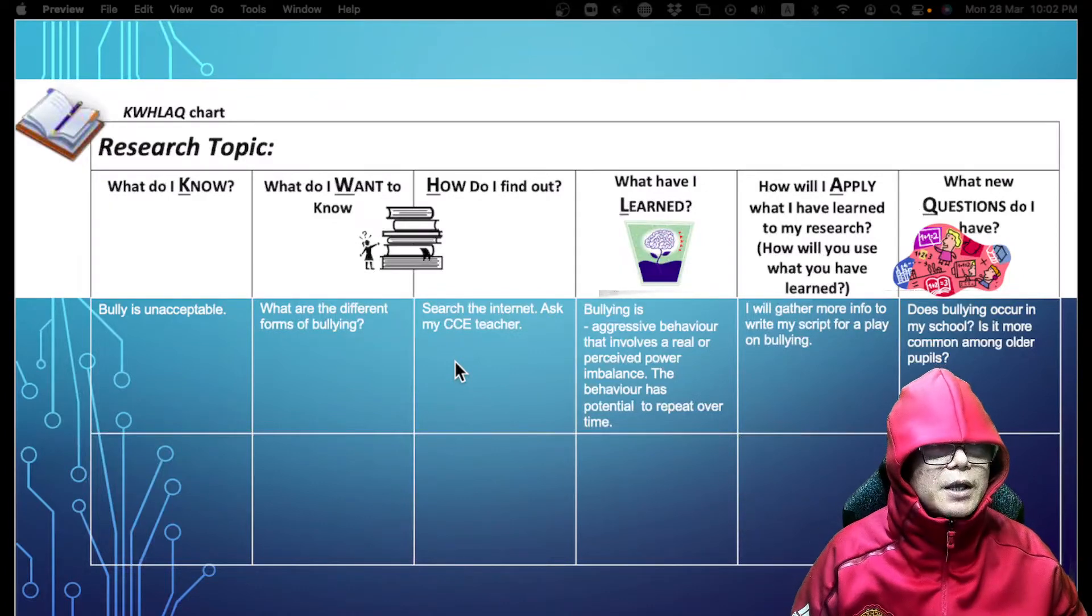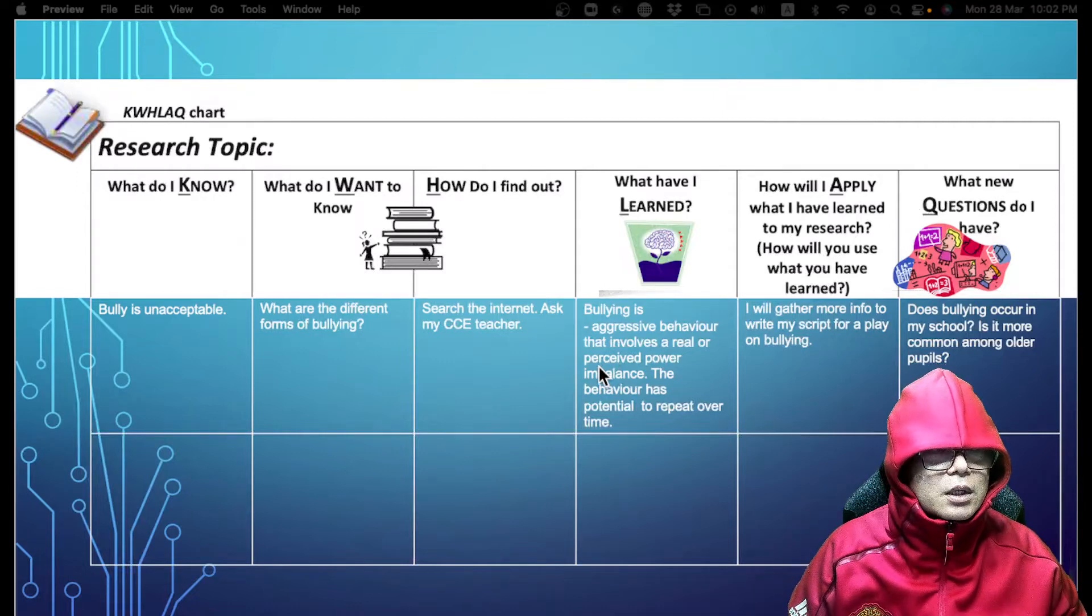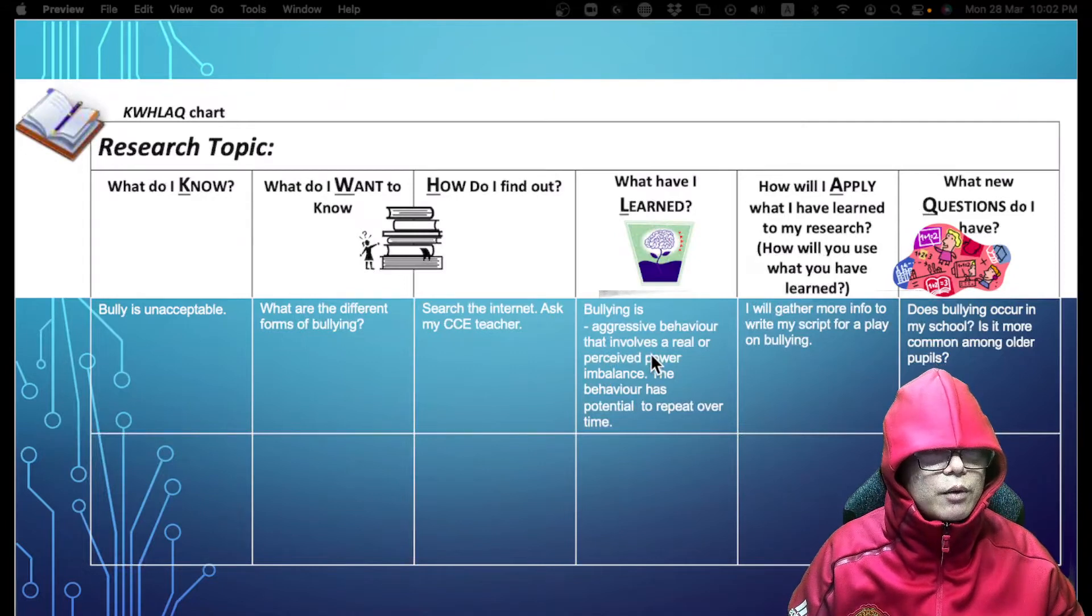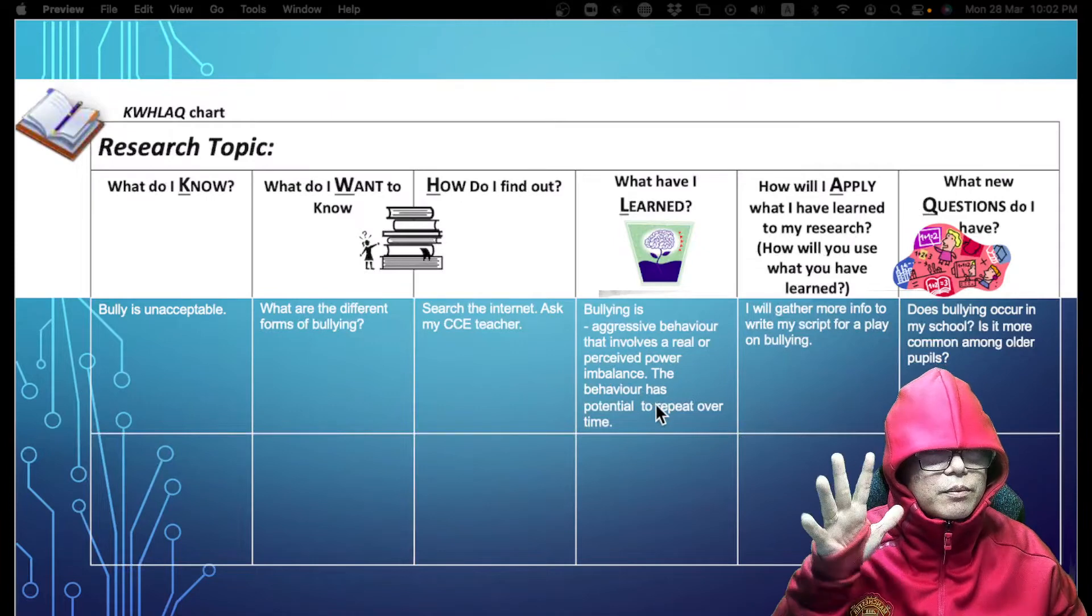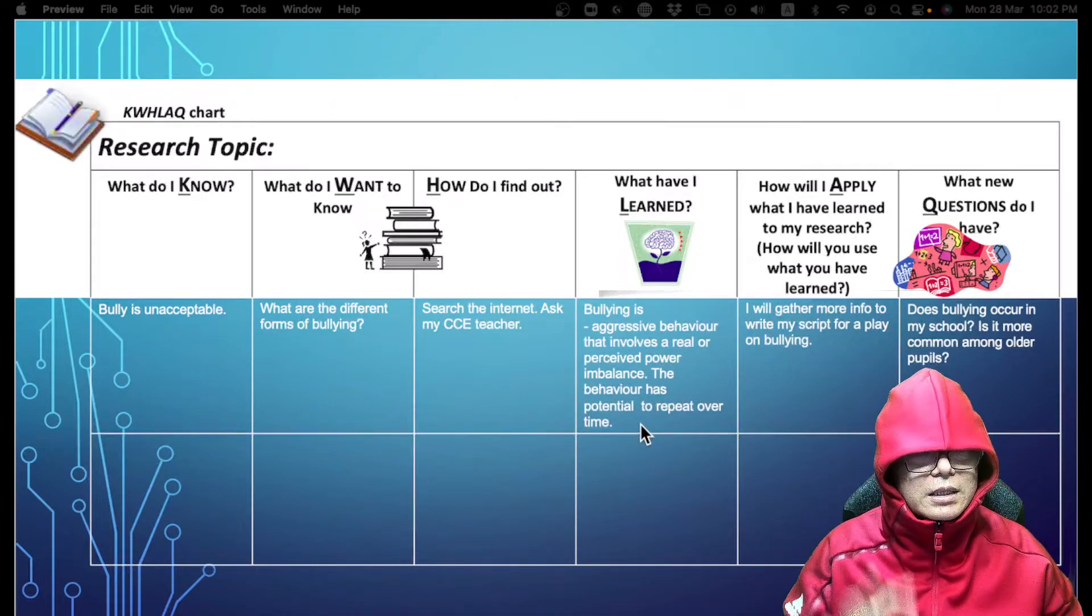After I do my research, this is what I learned from going through the internet and asking my teacher: bullying is aggressive behavior that involves a real or perceived power imbalance. The behavior has a potential to repeat over time. This is what I find out from my teacher and from the internet.